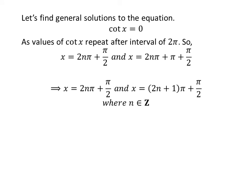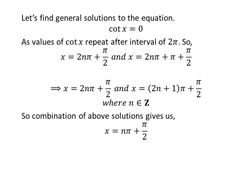Further simplification gives us the general solutions: 2n times pi plus pi over 2, and 2n plus 1 times pi plus pi over 2. Since 2n is an even integer and 2n plus 1 is an odd integer for any n, the union of these two sets is the set of all integers. So the general solution is n times pi plus pi over 2, where n is an integer.